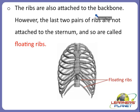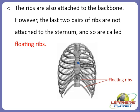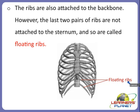The ribs are also attached to the backbone. However, the last 2 pairs of ribs are not attached to the sternum - as you can see here, these are not attached while other pairs are. Because they are free, these last 2 pairs are called floating ribs. They do not actually float around inside our body but are attached to our backbone. Sometimes people can be born with an extra rib.